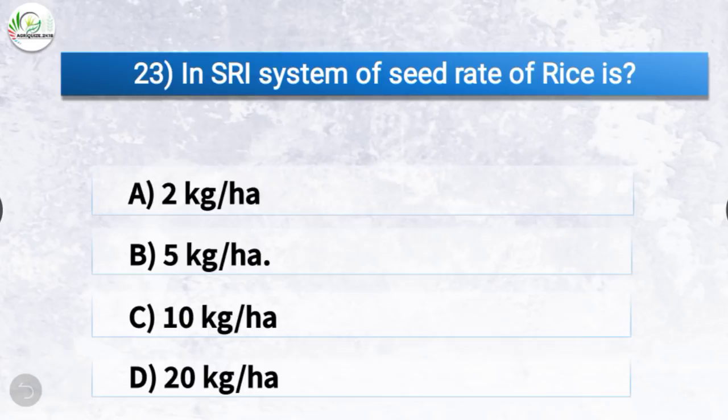Question number 23: In SRI system, the seed rate of rice is? The correct answer is option B, 5 kg per hectare. In SRI system, the seed rate of rice is 5 kg per hectare.